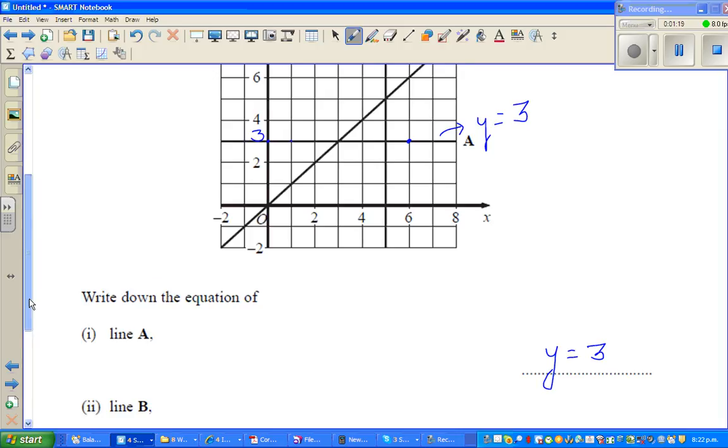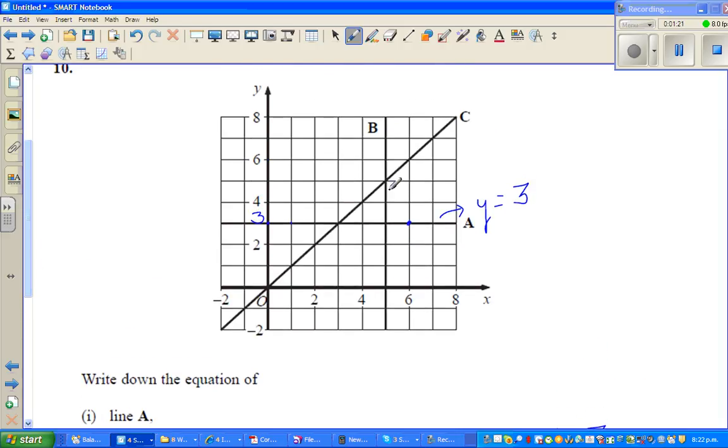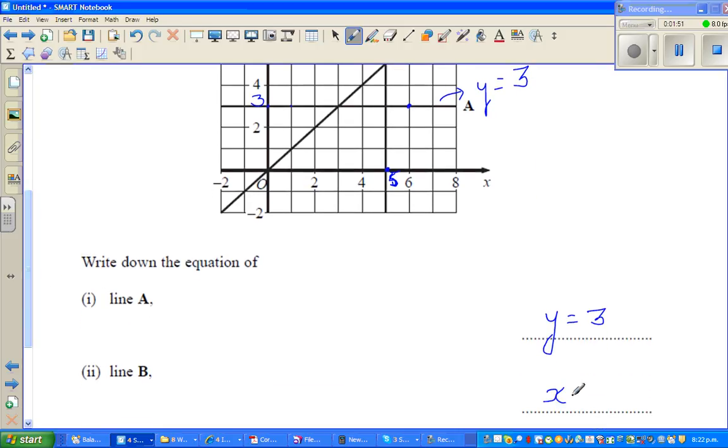Now if you look at line B, each point on line B corresponds to 5 on the x-axis. So this is your 5 on the x-axis. So this line is called, same logic, x equals 5. Because each point, so this point would be (5, 7), this point would be (5, 6), and so on. So all the points correspond to 5 on the x-axis. So we can say the line B is x equals 5.